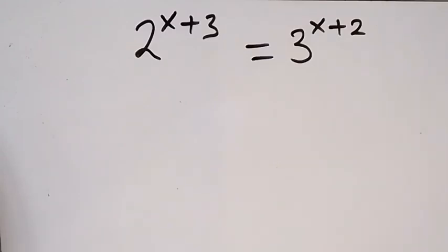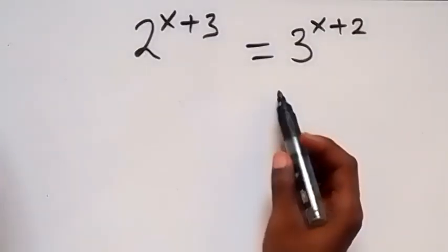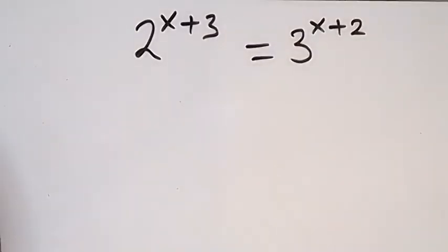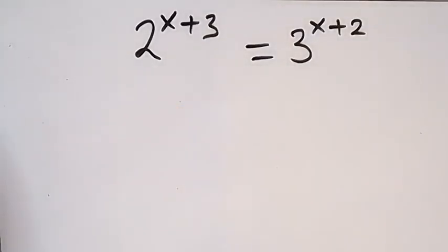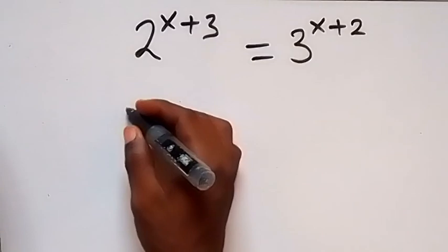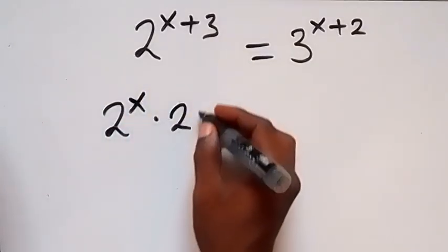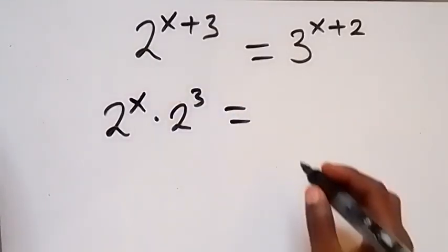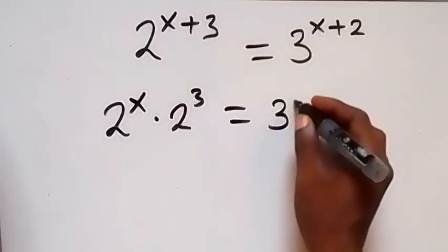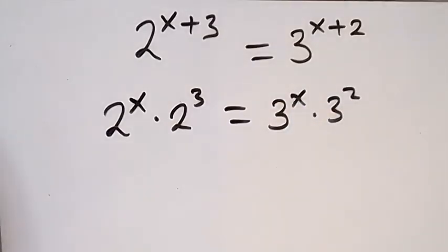Hello, you are welcome. How to solve this problem: 2 raised to power x plus 3 equals to 3 raised to power x plus 2. From here we can separate this using the law of indices, and this becomes 2 raised to power x times 2 raised to power 3 equals to 3 raised to power x times 3 raised to power 2.